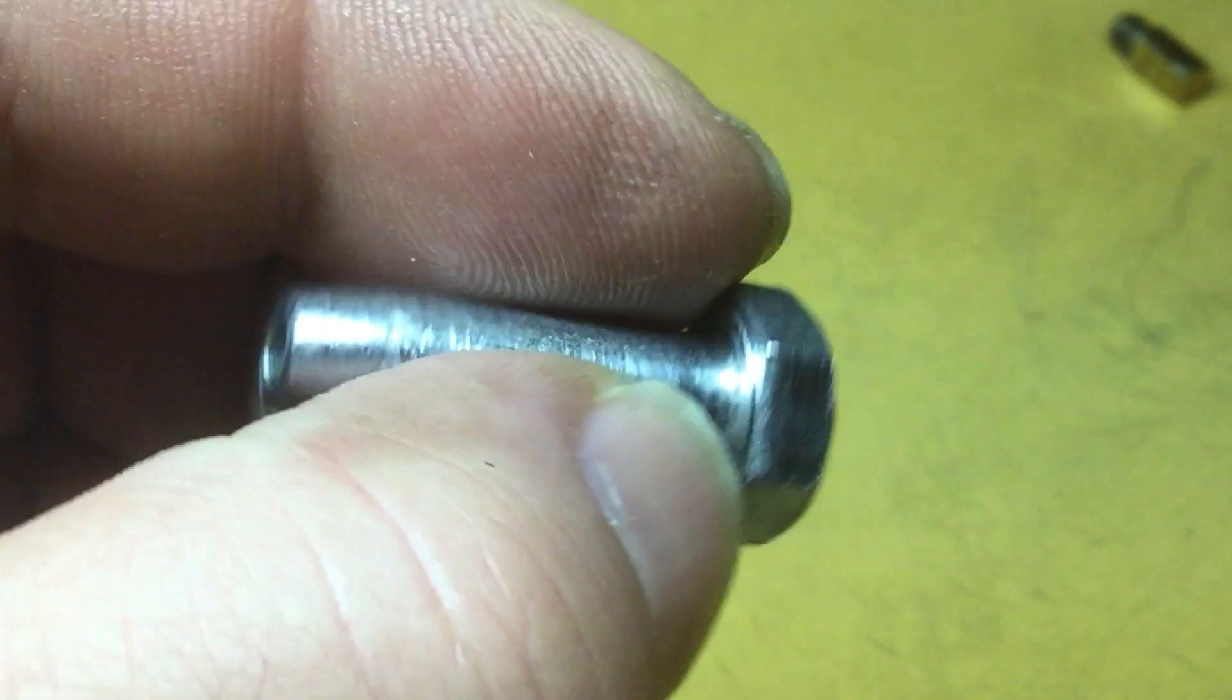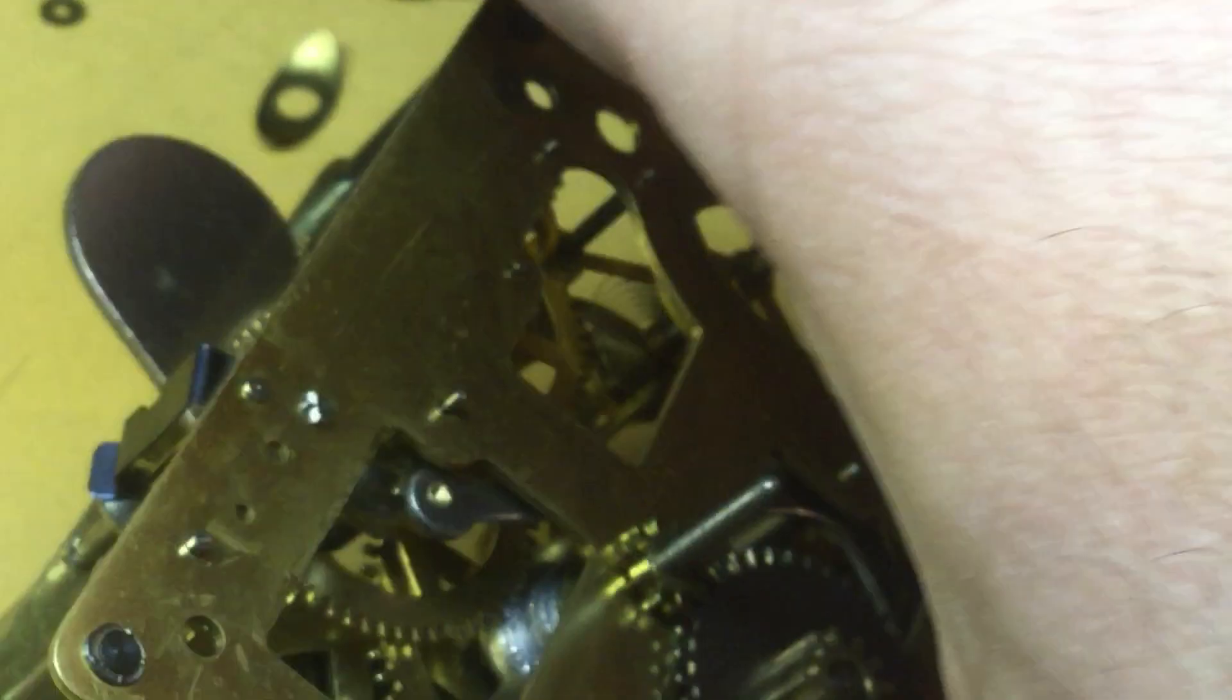And now my time setting knob is on there as tight as it needs to be. Okay. Very handy little tool. Sort of a homemade hollow punch, but sort of application specific.